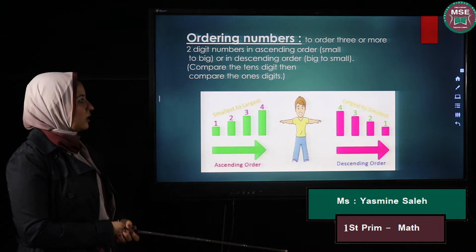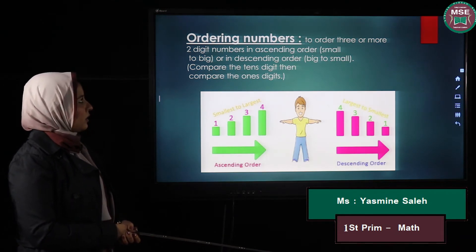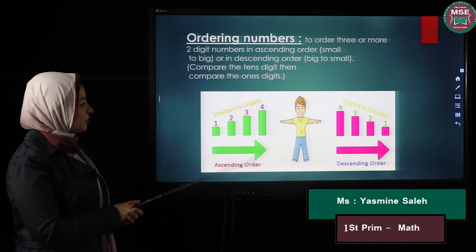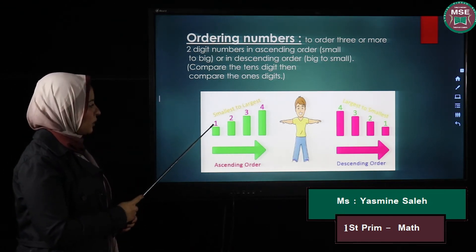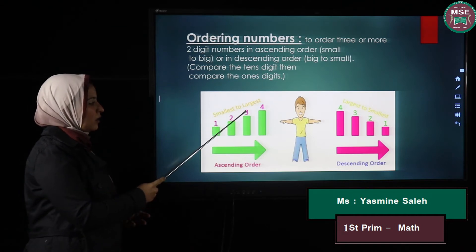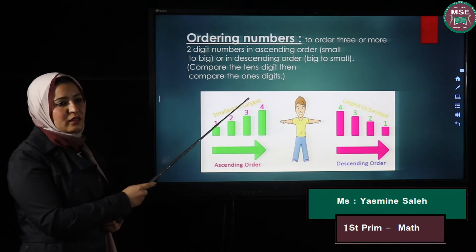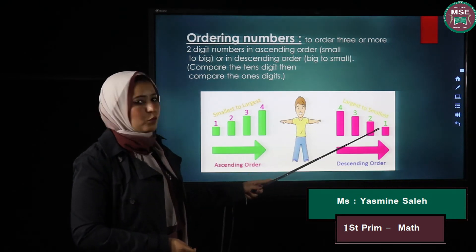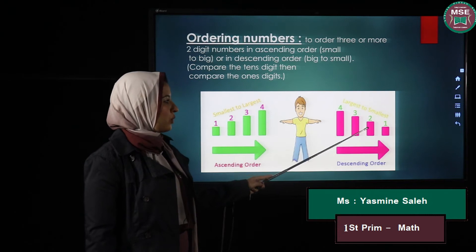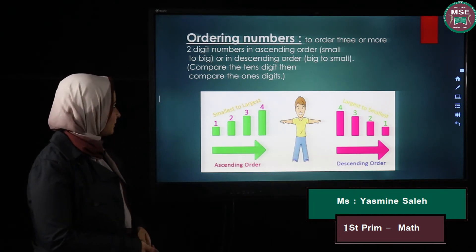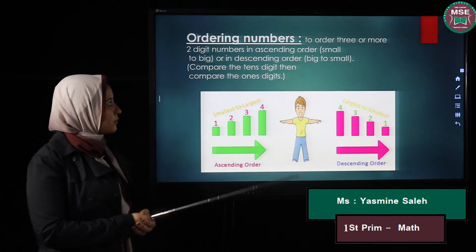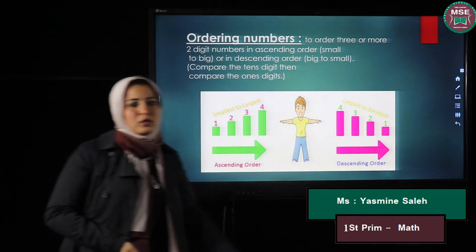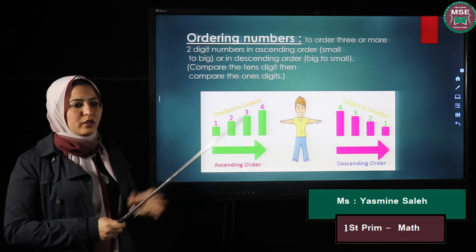Now we will talk about ordering numbers in ascending or descending order. Ascending means we order them from the small to the big — I start by the smallest number and go bigger and bigger until I reach the biggest one. In descending order, as we do in comparing, we compare the tens digit first, then the units. And if I have a two-digit number and a one-digit number, the two-digit number is bigger.